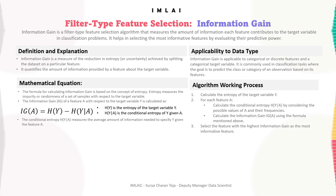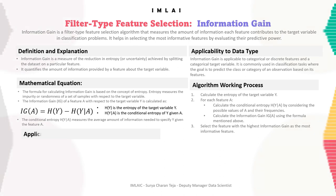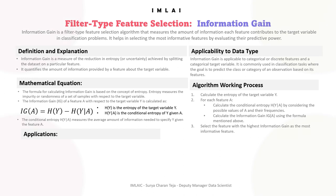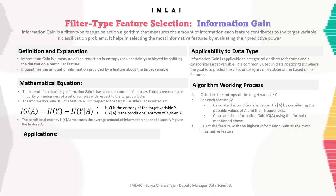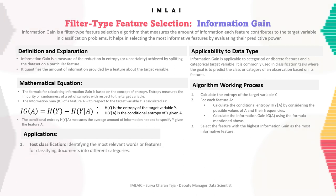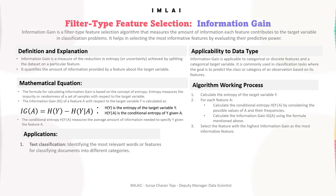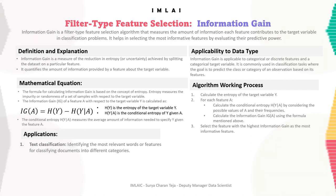Information gain can be applied to various classification problems where feature selection is needed. It helps identify features with the most predictive power in distinguishing between different classes. Applications include text classification — identifying the most relevant words for classifying documents — and customer segmentation, determining the features that contribute most to different customer segments.